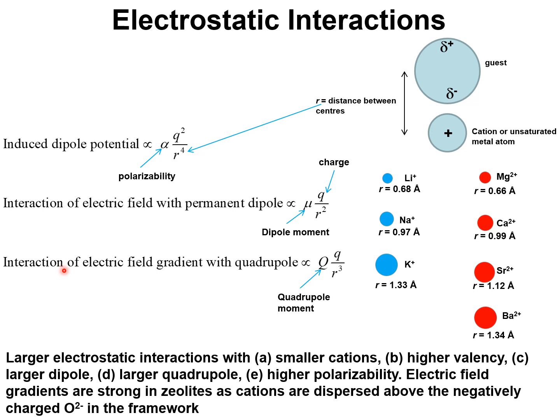And thirdly, we have the interaction of the electrical field gradient with the quadrupole moment of the gas molecule. Here Q represents the charges of the extra framework cation and R is the distance from center to center between the guest and the cations.